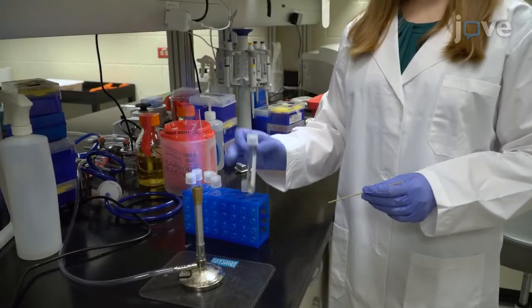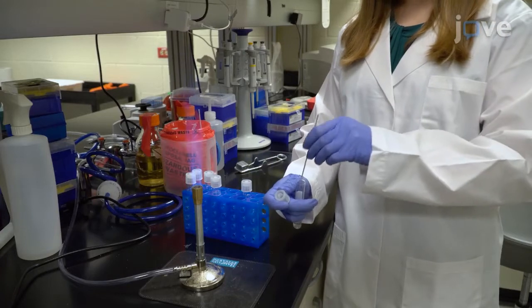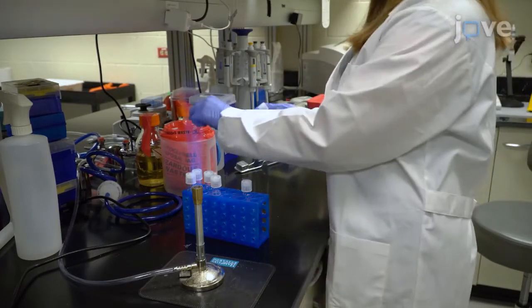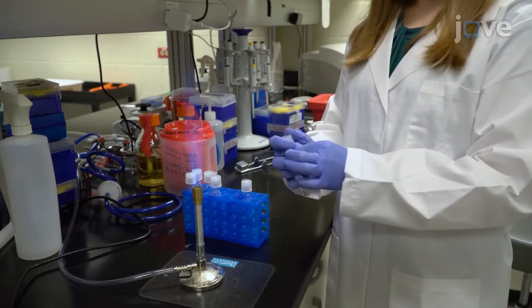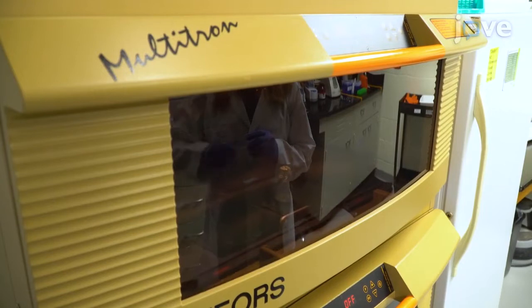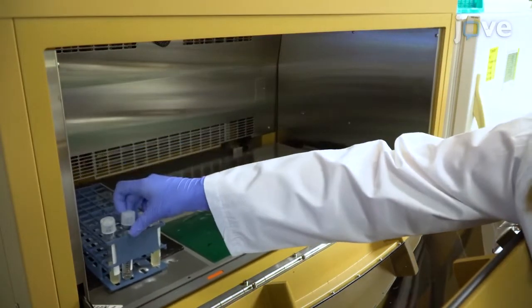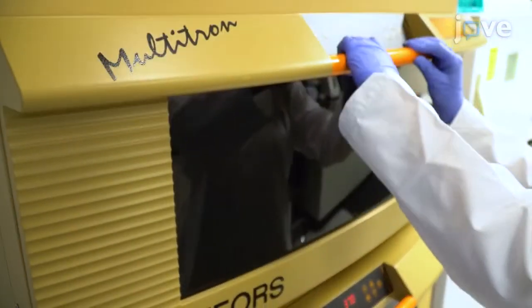On the evening before the experiment, inoculate five milliliters of LB broth with several colonies of Pseudomonas aeruginosa PAO1-PMRP9-1 from an antibiotic containing LB agar plate and culture the bacteria overnight at 37 degrees Celsius with agitation at 250 revolutions per minute.